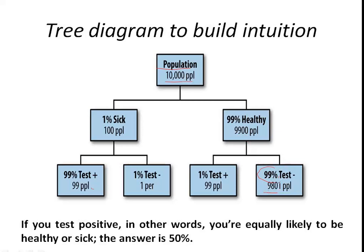By knowing this, you can say that if 99% of healthy people test negative, then 1% — that is 99 people — tested positive. So if you observe this diagram, you can conclude that if you tested positive, you are equally likely to be healthy or sick, because 99 sick people tested positive and 99 healthy people also tested positive. The answer is 50%.